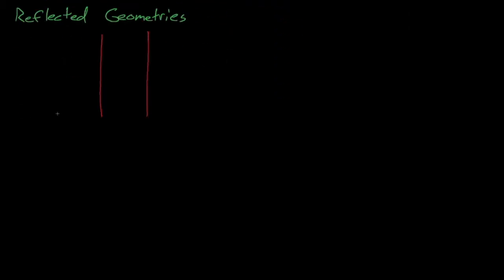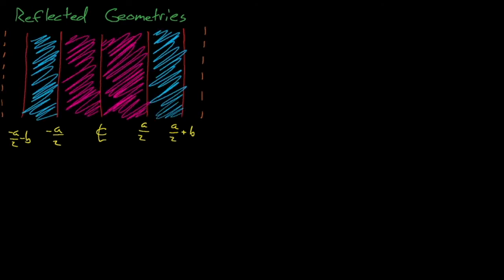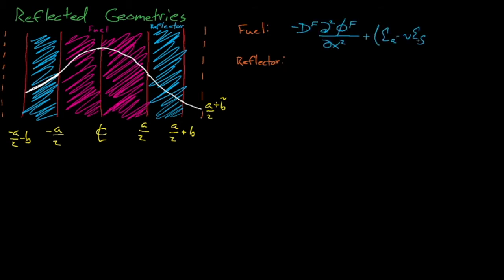Now, let's get back to solving these diffusion equations. Here, we'll consider a 1-D geometry where a slab of fissile material with thickness a is reflected on both sides by a non-fissioning reflector material with thickness b on each side. Our system will be symmetric around x equals 0, and x equals a over 2 is the boundary between the fuel and the reflector, and x equals a over 2 plus b is the outer edge of the reflector.